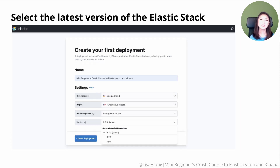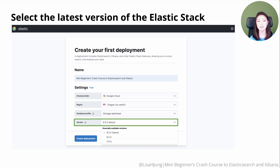Then select the latest version of the Elastic stack, which at the moment is 8.3.3. Once you have configured your settings, click on the create deployment option.